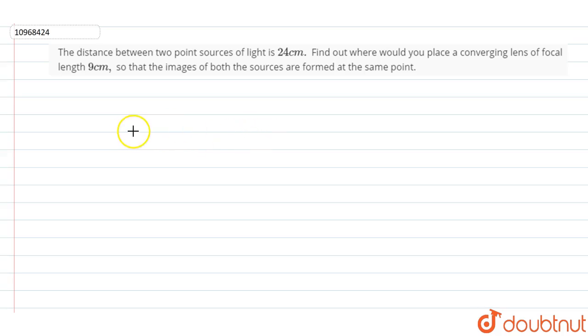So first we will create a diagram. We will consider that this is our source 1, this will be our source 2, and this will be our lens.